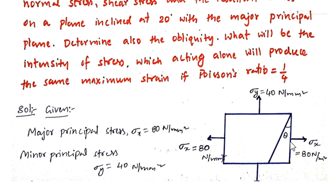These planes are the principal planes where only normal stress is acting — this is discussed in the derivation of principal stresses and strains, case two, please refer to that. Here we are supposed to find normal and shear stresses on this oblique plane, and also the resultant stress and obliquity. To find resultant and obliquity, we must first find normal and shear stresses on this oblique plane.